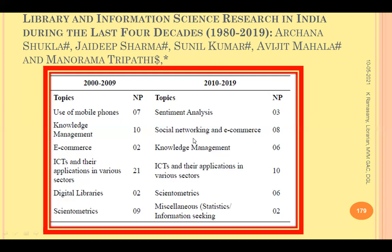These are the new and emerging topics in library and information science research. We discussed three important things: the various metric methods in library science including bibliometrics, scientometrics, informetrics, altmetrics, and webometrics; impact measurement tools like impact factor, H-index, G-index, and I10-index; and the topics gaining momentum in LIS research. That ends this presentation series on research methodology. Thank you so much for your patient watching and listening.